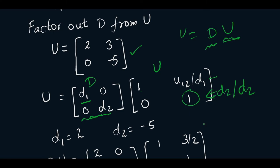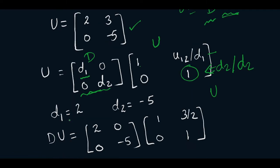Let us write our U matrix in the form of D and U. Here our d1 is 2, d2 is -5, and we write this in the form of these two matrices. So we have the factorization of A as L times D times U.